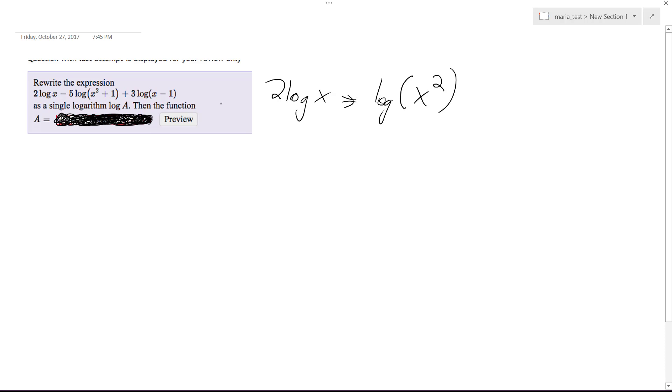And if I'm adding two things, I'll go ahead and rewrite this and show you. Everything is going to be inside a log function. That's why it says log of a, and they just want me to write a. So rewriting this, 2 log of x is going to become x squared.